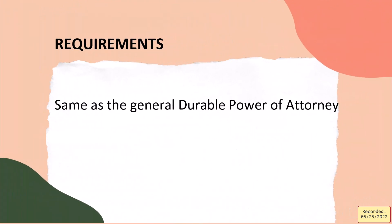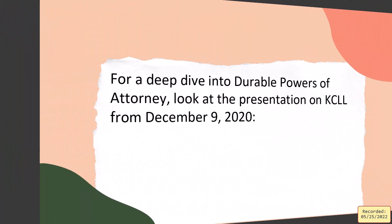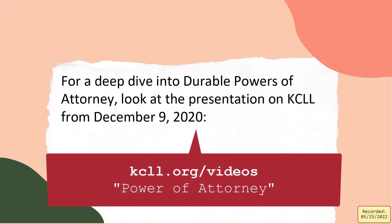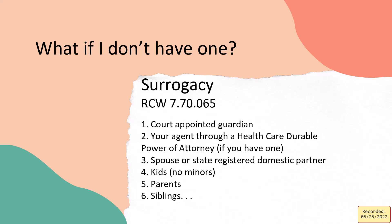KCLL did a great presentation on powers of attorney — you can Google it to find it. If you don't have a healthcare power of attorney, it's not guardianship, it's called surrogacy — a court appoints a surrogate. The first person they appoint would be from a priority list: spouse, kids, parents, etc. But if you have a friend you think would make better decisions, it's really a good idea to have a healthcare power of attorney in place.